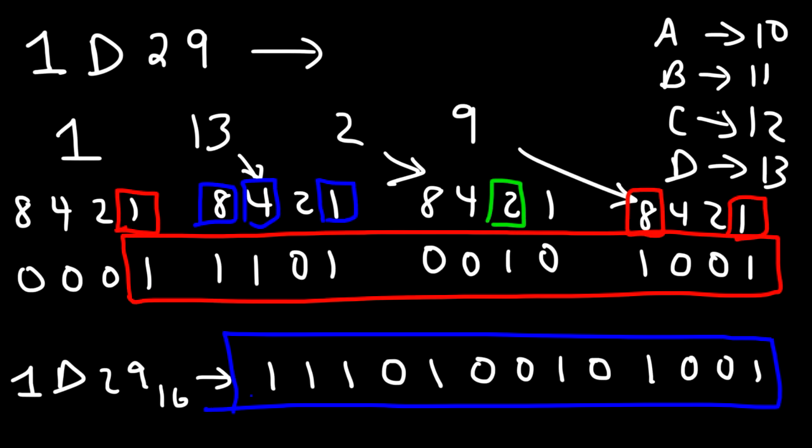So now you know how to convert a hexadecimal number into a binary number.